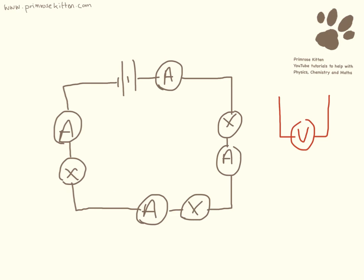Here we have a series circuit with a number of different components in. Now the really important thing you need to remember about an ammeter is that it needs to be in series. It needs to be lined up next to things. This is different to a voltmeter which I have over here which needs to be put across a component in parallel.